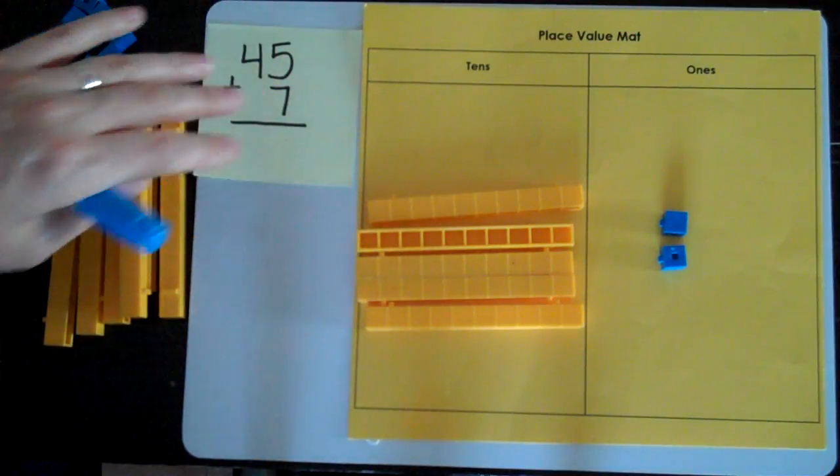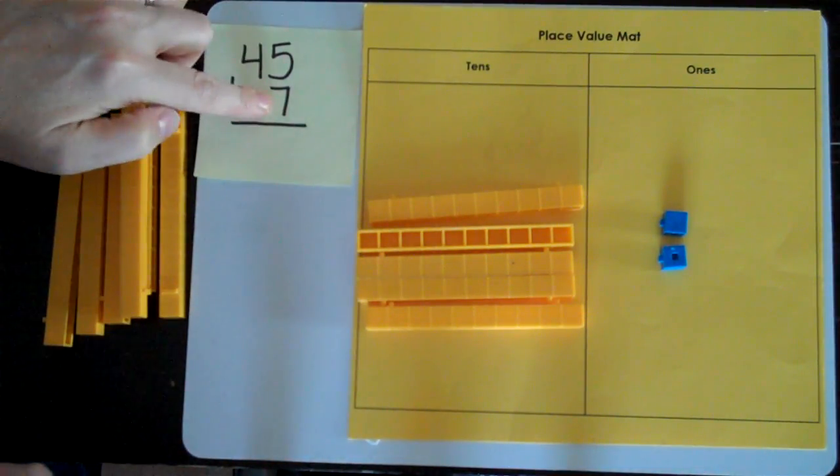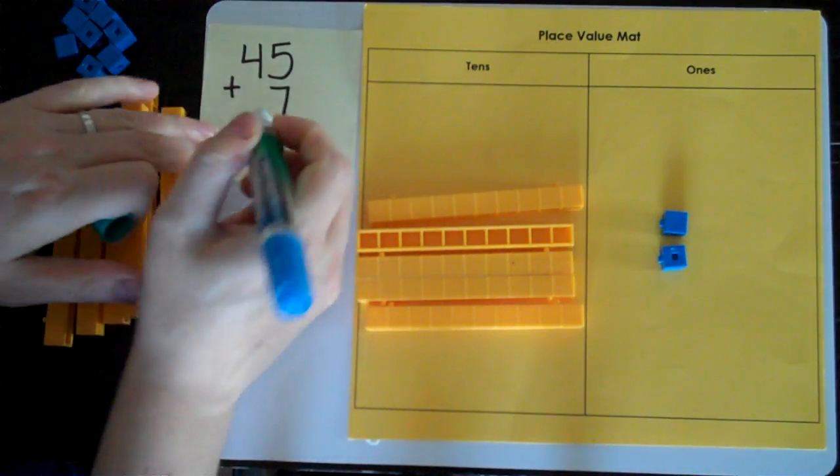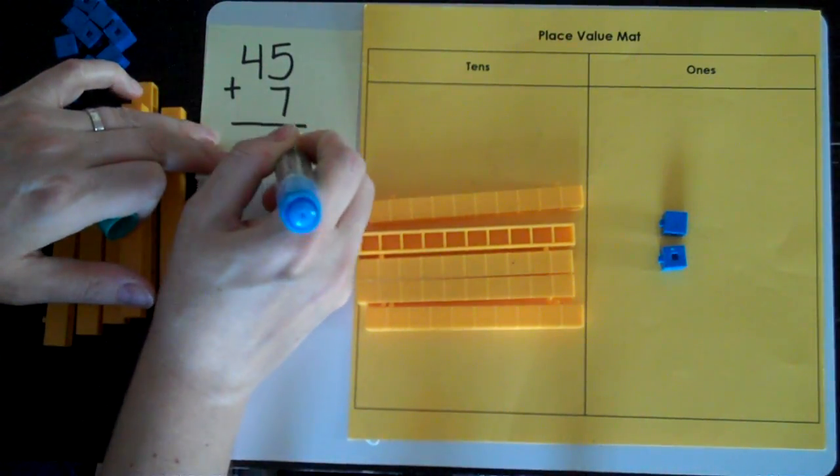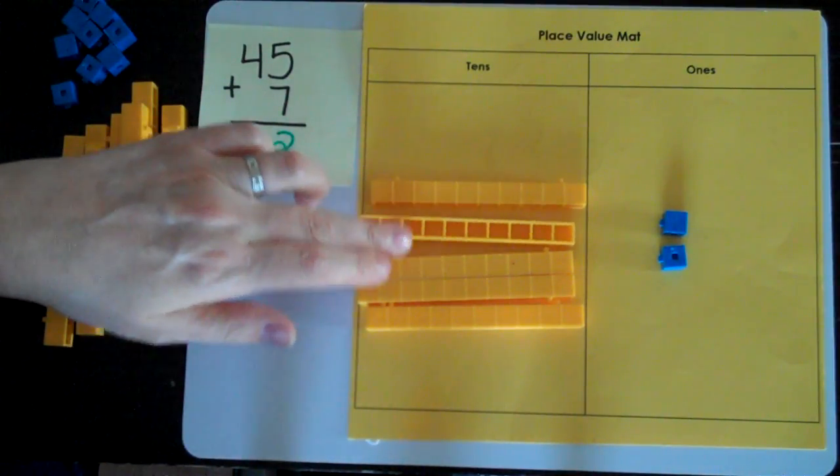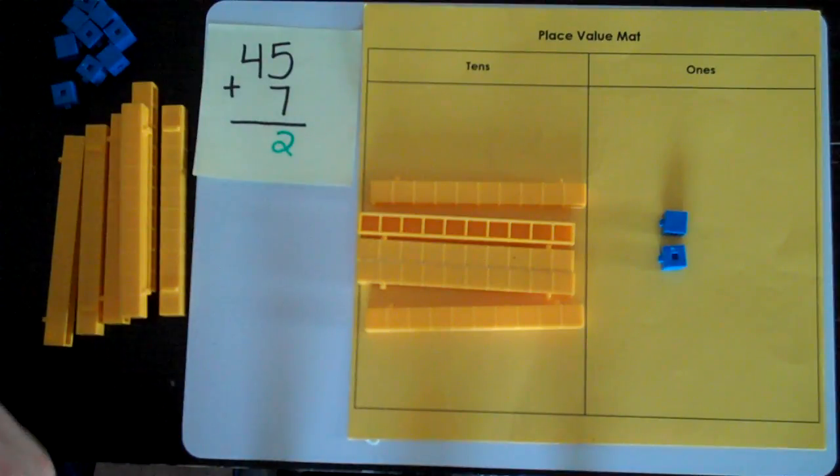So now I can look at what the answer to my question is. In the ones place, I have two ones. In the tens place, I have one, two, three, four, five tens.